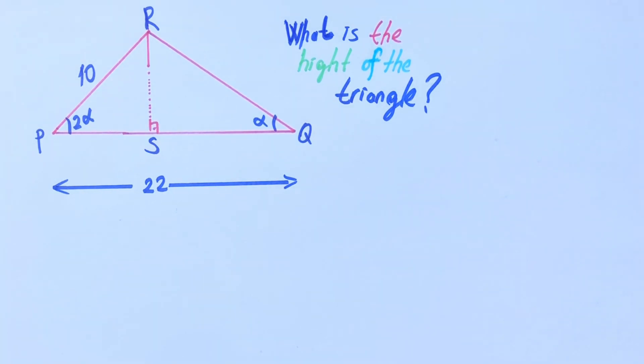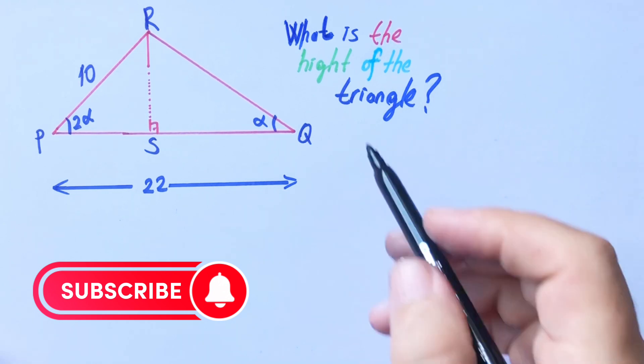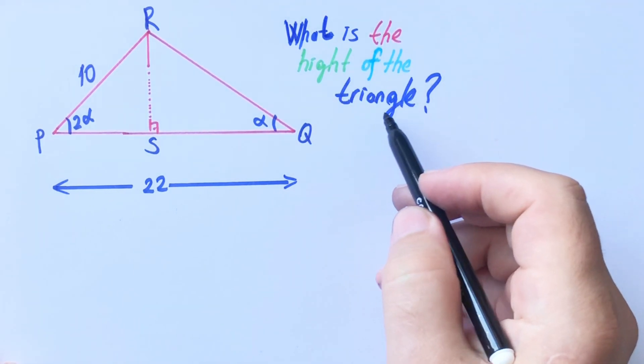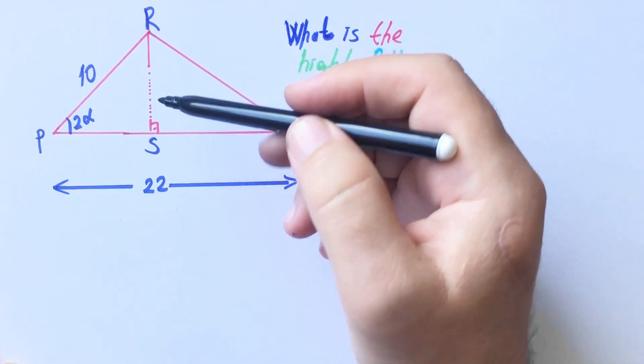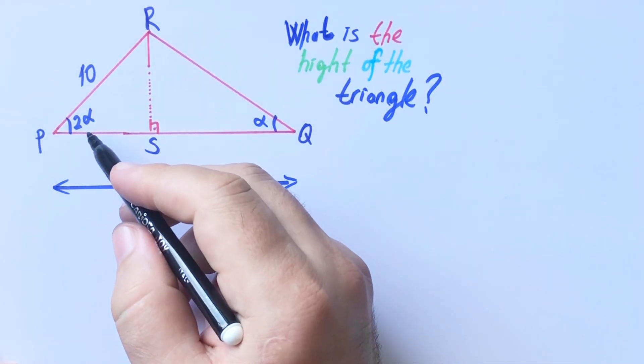Hello everyone, in this video we will calculate the height of the triangle. Well, here is the height, some lengths are given and the base angle ratio is 2.